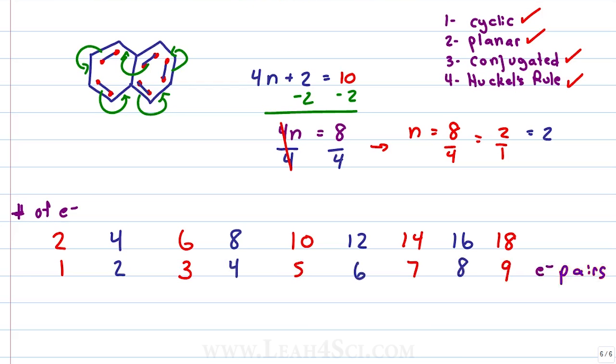This is how you can identify Huckel's rule without working through the math. First determine if your molecule is cyclic, planar and conjugated. If yes, count the resonating electron pairs and ask yourself, do I have an odd number of electron pairs? If yes, this molecule obeys Huckel's rule. Do I have an even number of electron pairs? If yes, this molecule does not obey Huckel's rule.